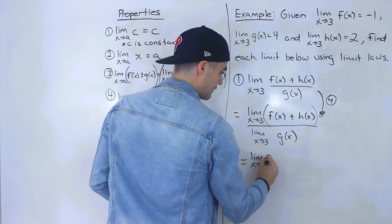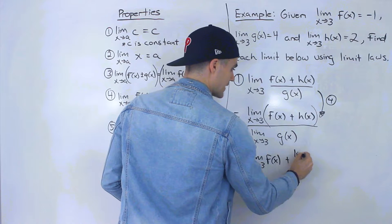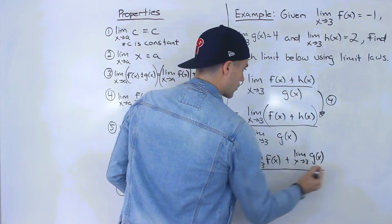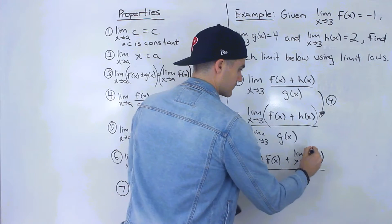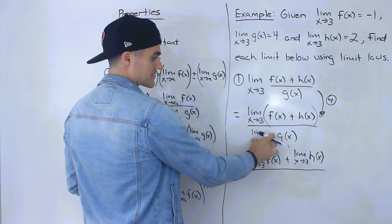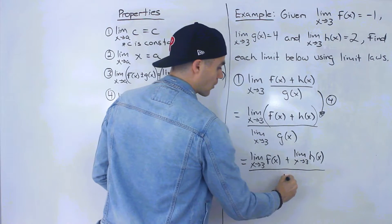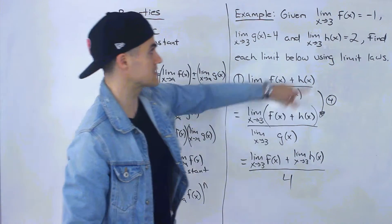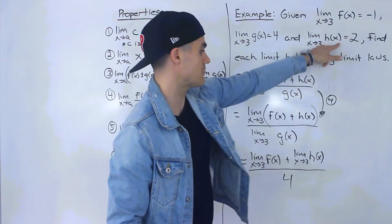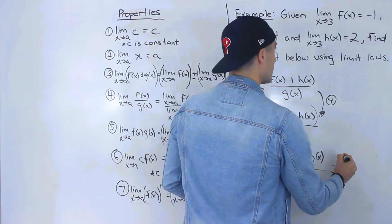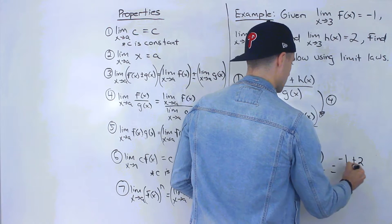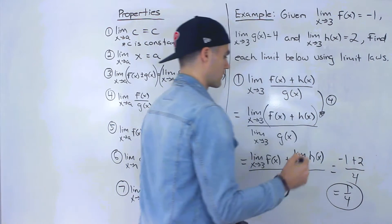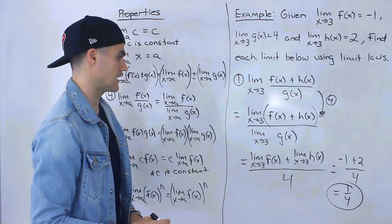So in the numerator we get: limit as x approaches 3 of f of x, plus limit as x approaches 3 of h of x. And then in the denominator we have the limit as x approaches 3 of g of x, which we can substitute as 4 right away. Now we can substitute negative 1 for the f of x limit and 2 for the h of x limit. So we end up with negative 1 plus 2 over 4, which gives us 1 over 4.